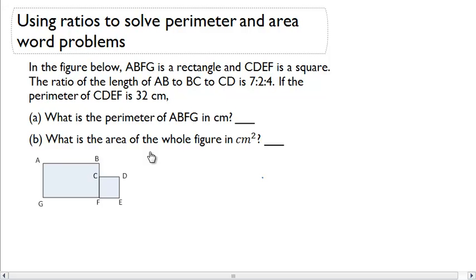Using ratios to solve perimeter and area word problems. In the figure below, ABFG is a rectangle, and CDEF is a square.